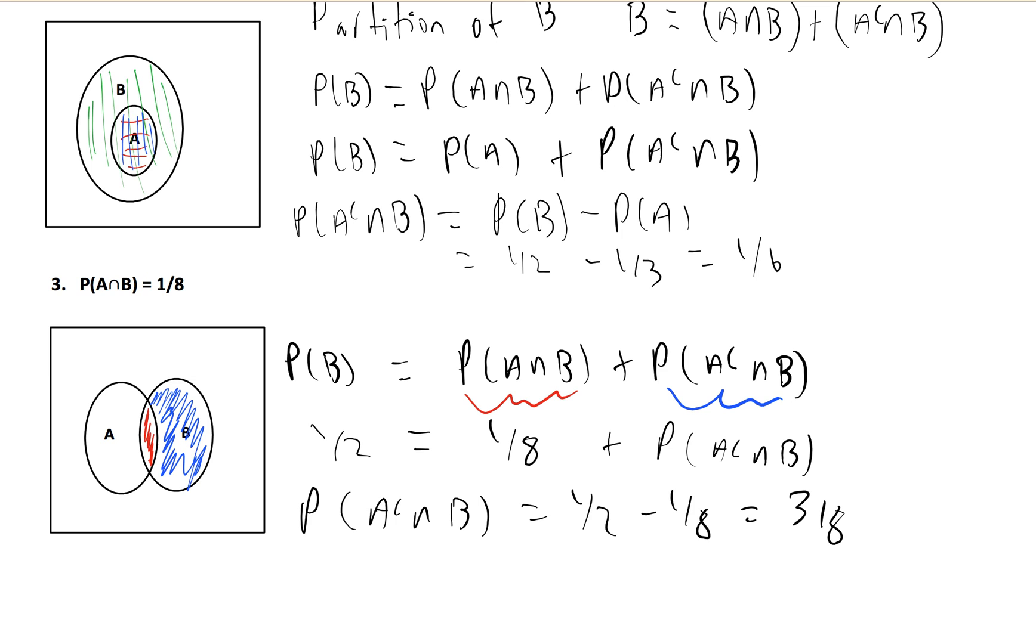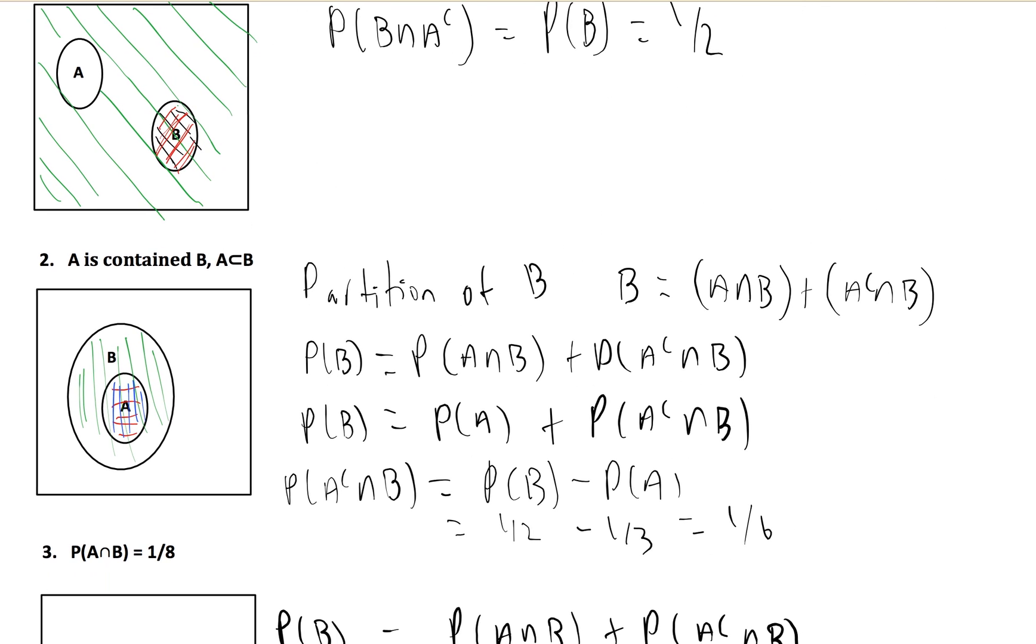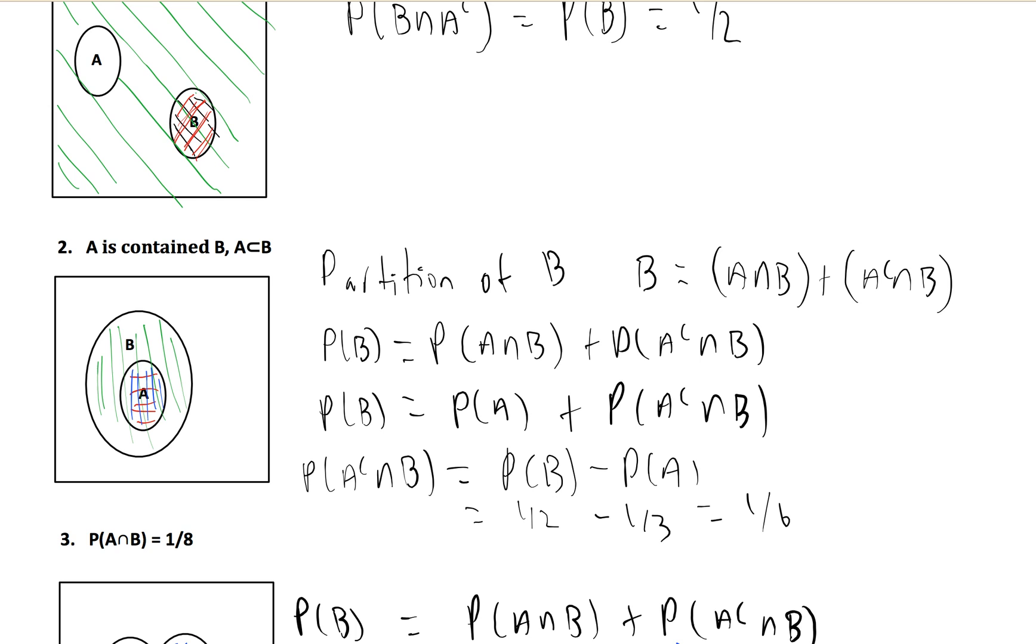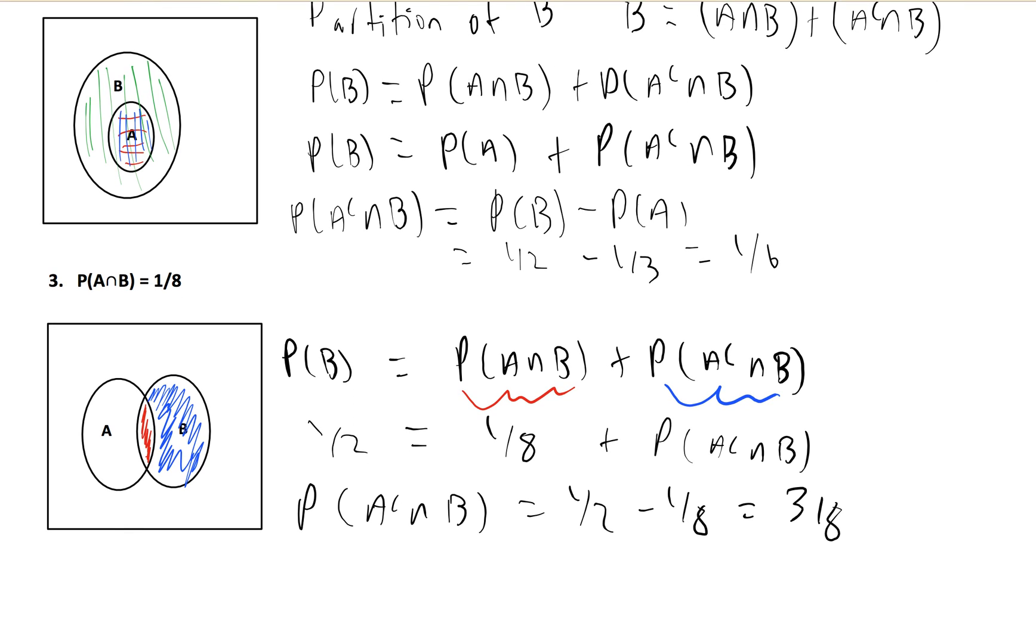So kind of similar ways to do the second and the third part, but the first part we did pretty much all with a Venn diagram. It's important to understand these Venn diagrams and use them so you can understand what the formula is doing. We didn't have to really play around with too many formulas. We used one, which is a partition of B, and we answered a question in a lot of different ways. So sometimes you just need a visual understanding of what's going on, and it makes the problem a lot easier.